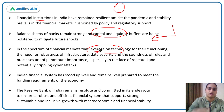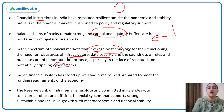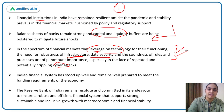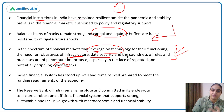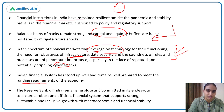During this time period, we have started leveraging a lot of technology and have accepted digital platforms widely. Although we are moving towards technology, new risks are emerging — specifically cyber attack risks. To deal with that, we need to improve our infrastructure, data security, and come up with more rules. The Indian financial system has stood up well and remains well prepared to meet the funding requirements of the economy.